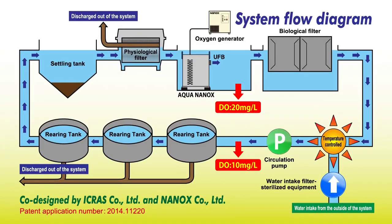This figure shows the system flow diagram. In the CRAS, rearing water is reused by recirculating filtration, and additional water is supplemented as needed to compensate for water evaporation.